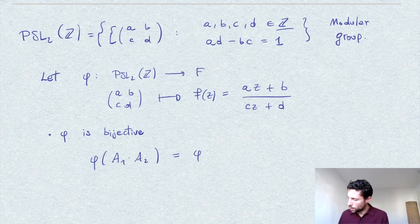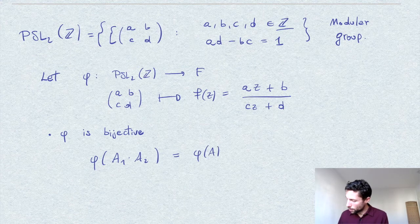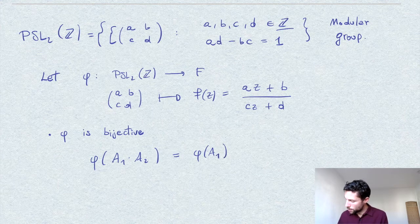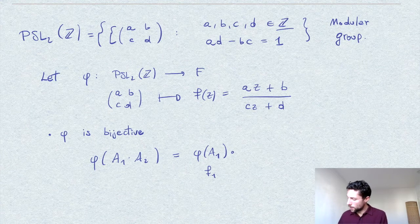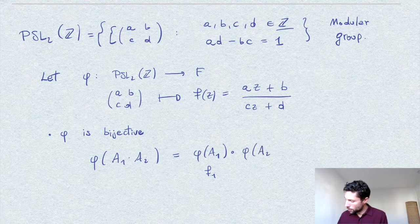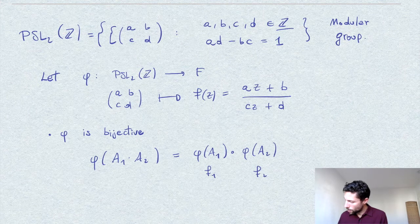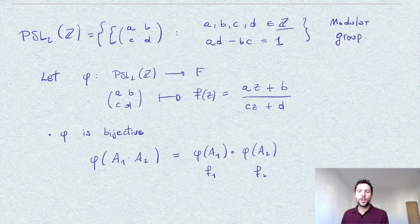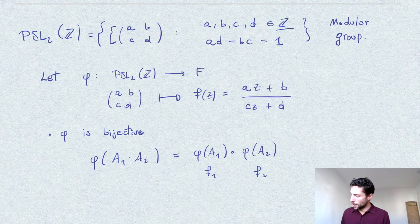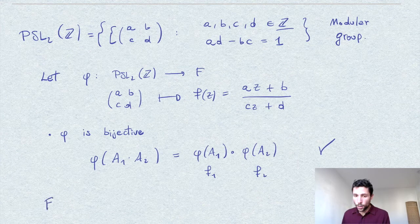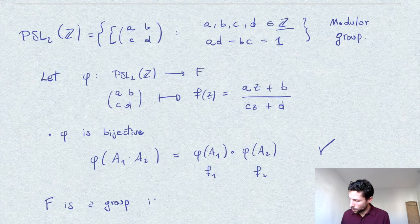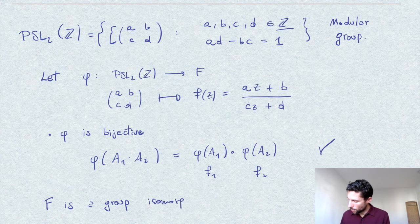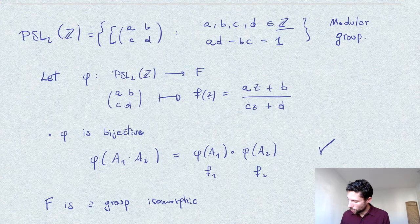corresponds to φ of A₁, which would be a function F₁, composed with φ of A₂. This is precisely what we showed in the previous page. Our conclusion is that F is a group isomorphic to the modular group.